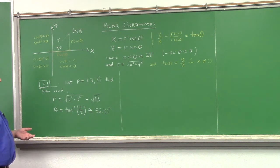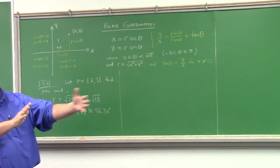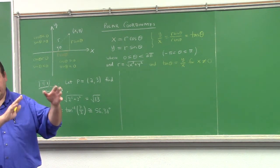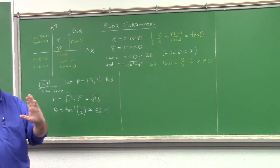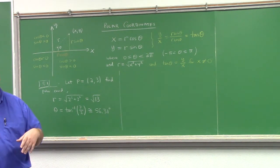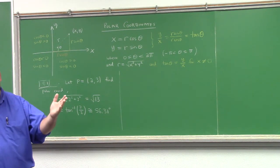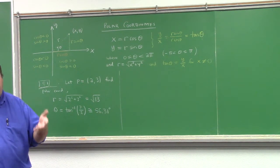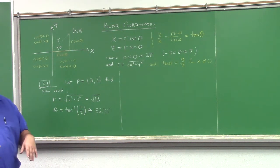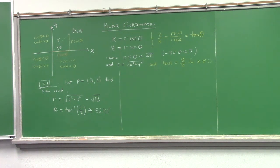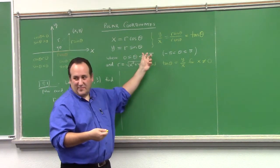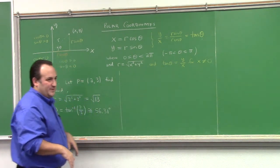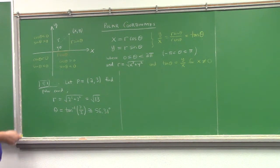The fussier definition of a coordinate system requires a one-to-one correspondence between some set and an open set of R2 or R3. Polar coordinates don't have this one-to-one correspondence because of the angle degeneracy — that's essentially the problem. But no one worries about this; we still call them polar coordinates.